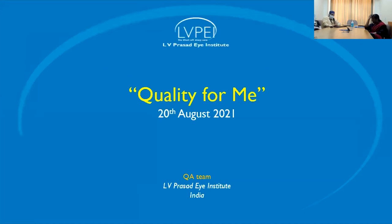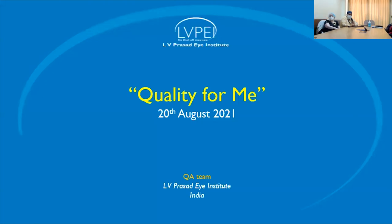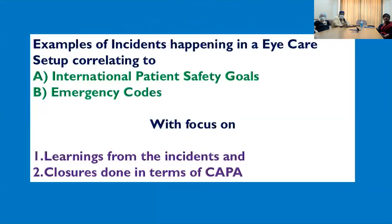Good afternoon, all of you. Ms. Anshu has already explained the basic things about quality that starts with me and ourselves. I will go into practical examples correlating to the International Patient Safety Goals — giving an example for each of the goals, what our learnings were, and what we did about it. These are some real incidents which have happened in our hospital from which we learned and are still learning. I have categorized the incidents into two parts: as per the International Patient Safety Goals and the emergency codes.